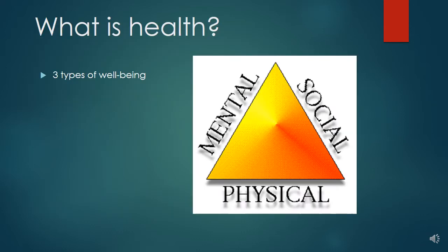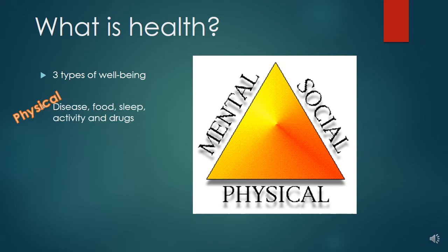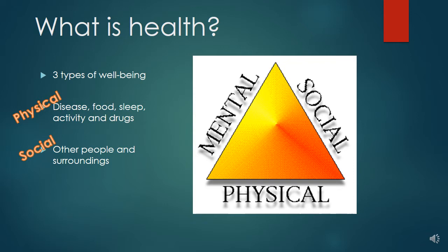According to the WHO, health is comprised of three types of well-being. Physical well-being is whether you are free from disease, have enough food to eat, have enough sleep, do enough activity, or whether you do drugs or not. Social well-being is affected by other people around you and your surroundings, such as the places where you live. Your mental well-being is affected by how you see yourself or how you feel about yourself — your self-image. The WHO states that if these three things are in balance, then you are deemed to have good health.